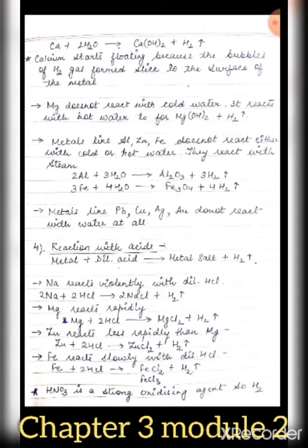Calcium reacts vigorously with dilute HCl but less so than sodium and potassium. Aluminium initially reacts slowly with dilute HCl because a protective layer of aluminium oxide on its surface prevents the acid from reaching the metal. First the oxide layer dissolves, then the reaction becomes fast as the aluminium surface gets exposed.